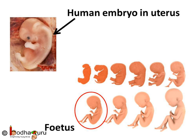The embryo keeps growing with time and gradually develops all body parts like hands, legs, eyes, nose, and ears. The stage of the embryo in which all the body parts can be identified is called the fetus. The fetus is basically an unborn baby. In human beings, this stage starts around 9 to 10 weeks after fertilization. When the development of the fetus is complete, the mother gives birth to the baby.